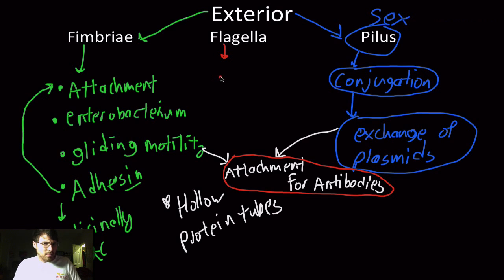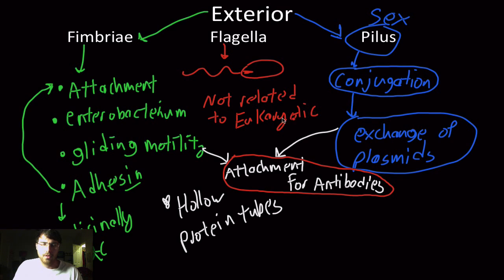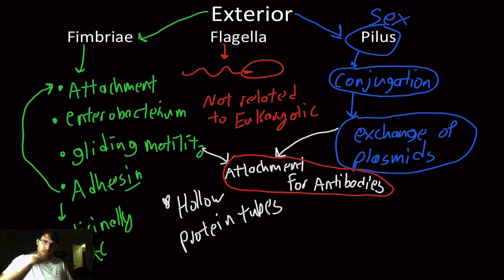The flagellum is also a hollow protein tube that functions like a propeller. Bacterial flagella are completely different from eukaryotic flagella — this is a result of convergent evolution, not shared ancestry. Archaeal and bacterial flagella use a rotary propeller motion, while eukaryotic flagella use a whip-like motion, like a sperm tail. Sperm use whips; bacteria use propellers. They are not related.